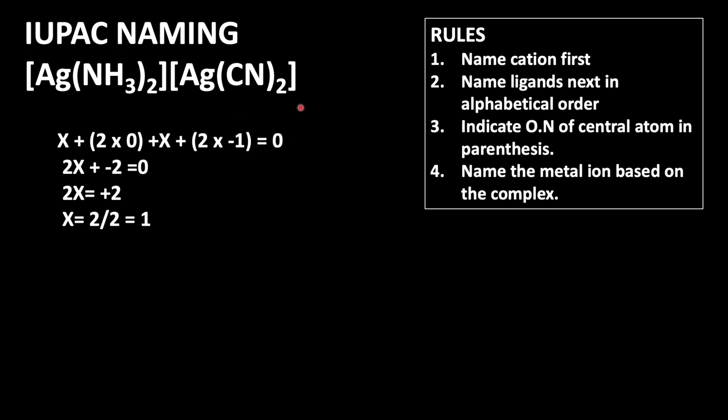2 times minus 1. It is a neutral compound, so equals 0. Let us add: x plus x is 2x plus minus 2 (because 2 times 0 is 0) equals 0. So 2x equals plus 2. x equals 2 divided by 2 equals 1. It means silver is in plus 1 oxidation state in both coordination entities.